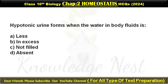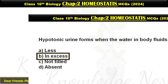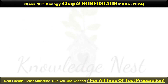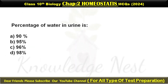Hypotonic urine forms when the water in body fluid is... Option B is the correct answer. The percentage of water in urine is... Option B is the correct answer.